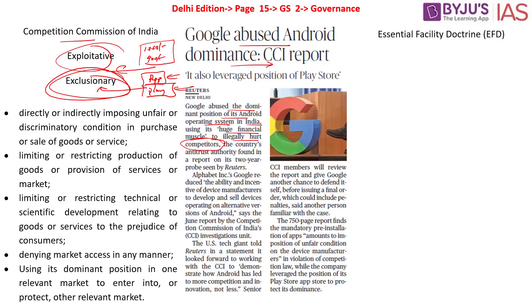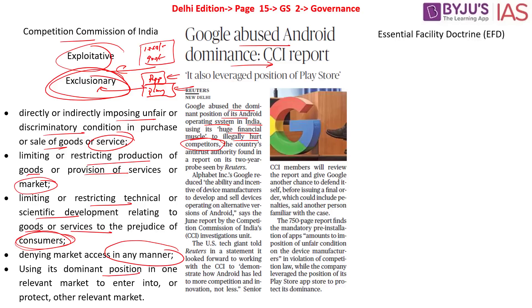Additionally, if a company directly or indirectly imposes unfair or discriminatory conditions in the purchase or sale of goods or services, limits or restricts production, withholds products from circulation, limits technical or scientific development to the prejudice of consumers, or denies market access to competitors — using its dominant position in one relevant market to enter or protect another — all of this constitutes abuse of dominant position.